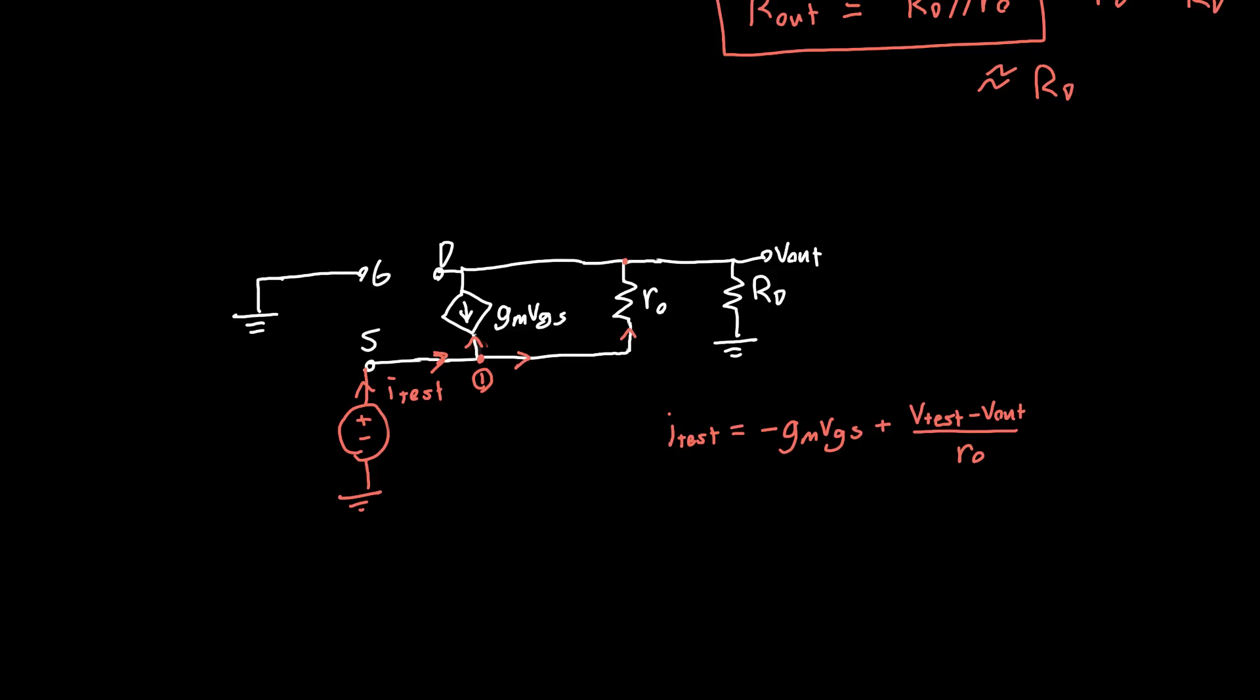So, V test minus V out over RO. And unfortunately, that's all we can say about this node, because we don't know what V out was. If V out were zero, for example, then this would be much easier, and we wouldn't have to worry about doing any additional calculations. But it's not horrible. Then let's apply KCL at this second node.